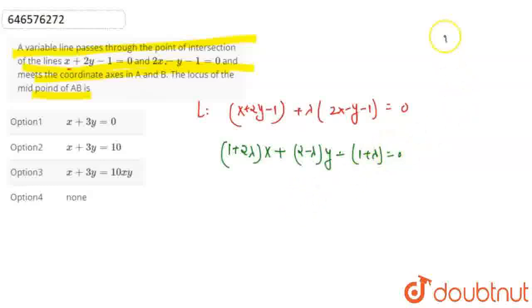Now this line is cutting the x-axis and y-axis at A and B. And we take the midpoint as h,k, whose locus we need to find.